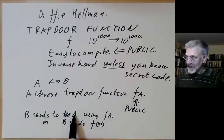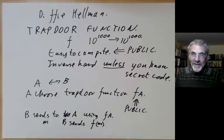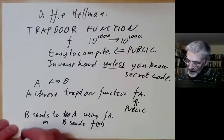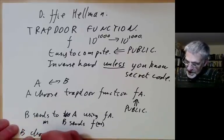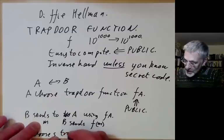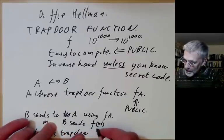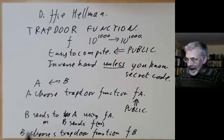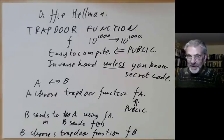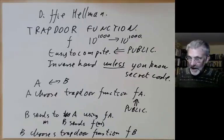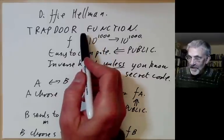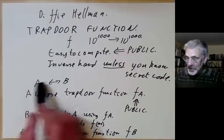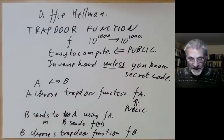That shows how B can send messages to A. But how does A send messages to B securely? B also chooses a trapdoor function f_B and makes it public, and A uses B's trapdoor function to send messages to B. So if we can find trapdoor functions, A and B can communicate securely, since each of them chooses a trapdoor function and publicizes it.